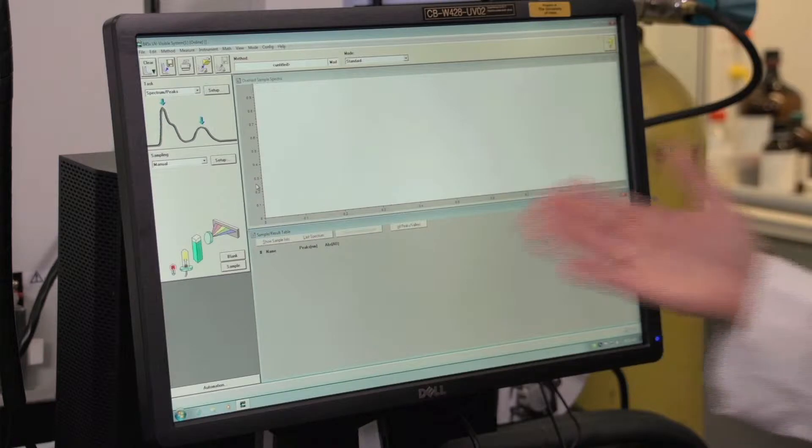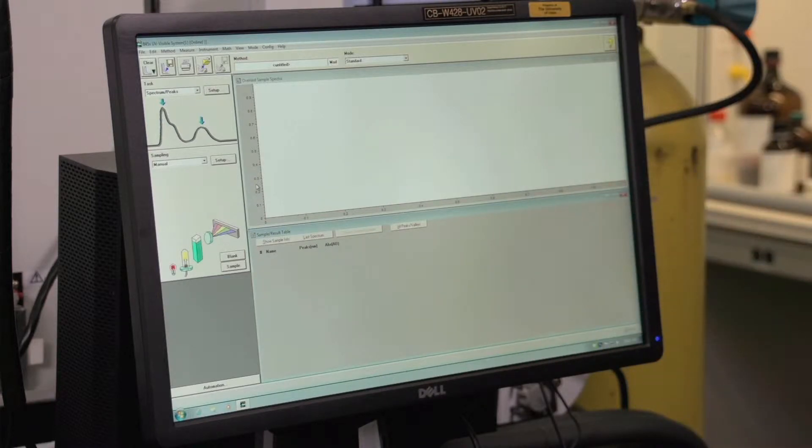Now we have the method is untitled, and the mode is standard, and then the task is spectrum peaks, and sampling is manual. So now that our software is set up properly, we're ready to collect the blank. To collect the blank spectrum, go ahead and select the blank button on the computer, and the spectrum will be collected.